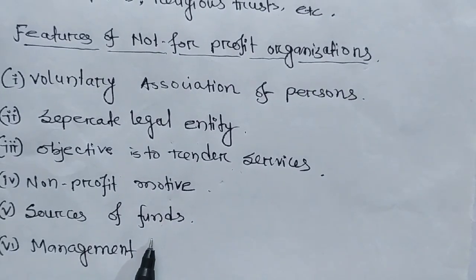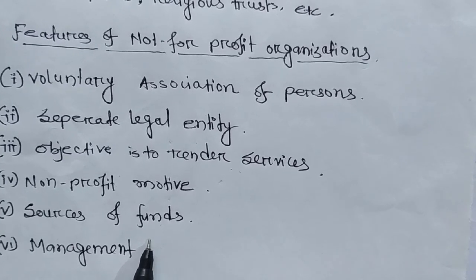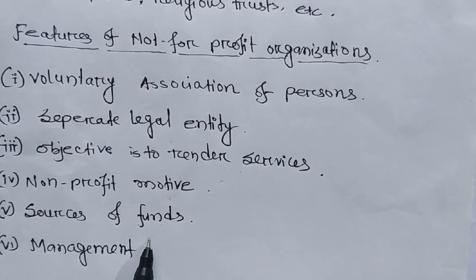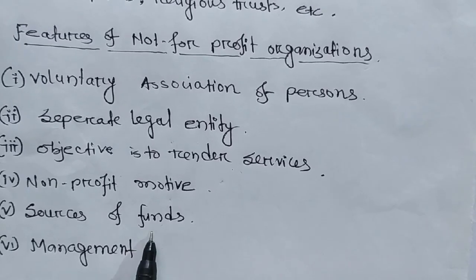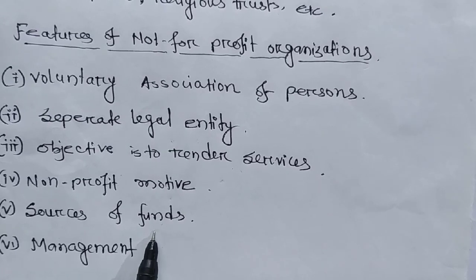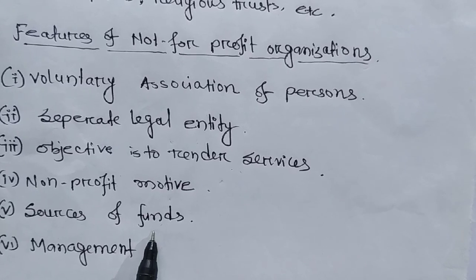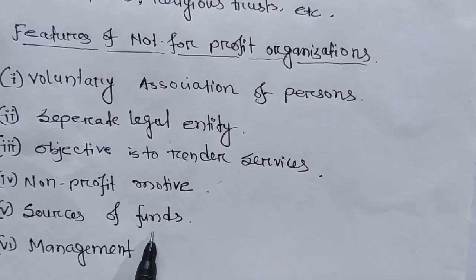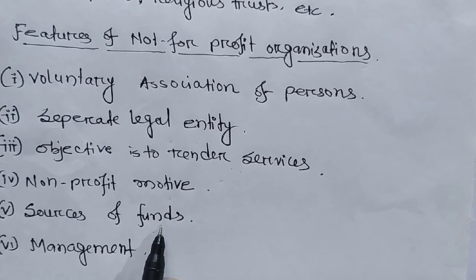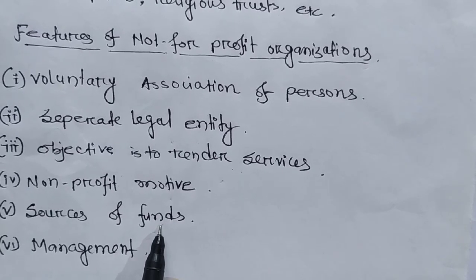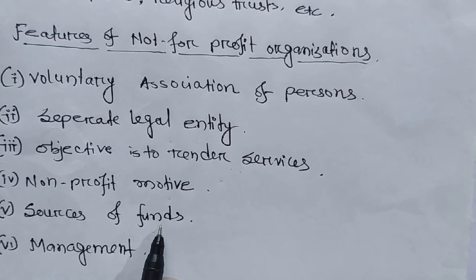Another feature is sources of funds. For profit-seeking organizations, funds come from owners or shareholders. For Not-for-Profit Seeking Organizations, the main sources of funds are subscriptions made by members — such as membership fees, admission fees, and entrance fees. Additional sources include donations from various institutions and the government.